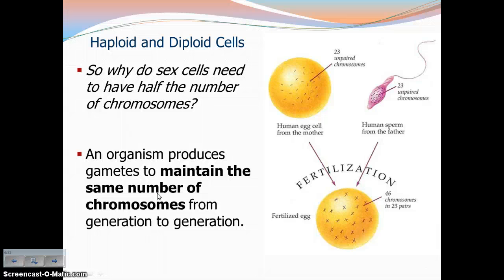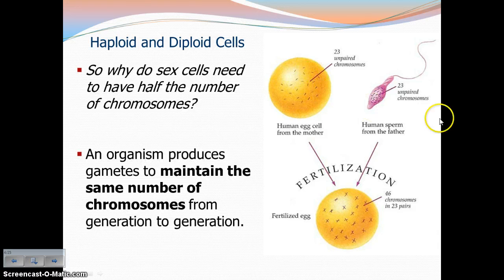Why in the world do our sex cells need to have half the number of chromosomes than every other cell in our body? Well, an organism has to produce gametes, or sex cells, in order to maintain the same number of chromosomes from generation to generation. To ensure that our children are going to have 46 chromosomes in all of their somatic cells, the 23 chromosomes need to come from the egg, and 23 chromosomes need to come from the sperm, so that during fertilization they get restored to 46. You have to have half in your sex cells so that when they come together, they get restored to that full diploid amount.